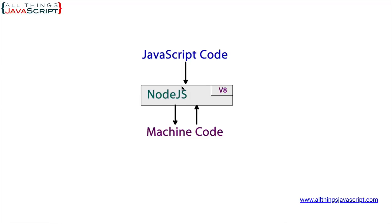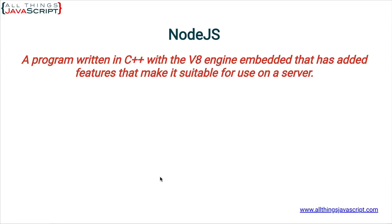The advantage of this application written in C++ — this Node application — is that it extends JavaScript. It allows us to do more with JavaScript than you could with just the JavaScript language. So, Node.js is a program written in C++ with the V8 engine embedded that has added features that make it suitable for use on a server. The target of this application is a server, and its purpose is to make JavaScript usable on a server.